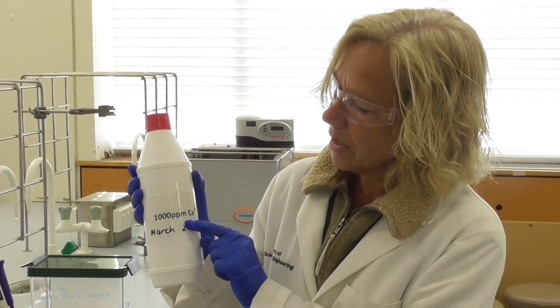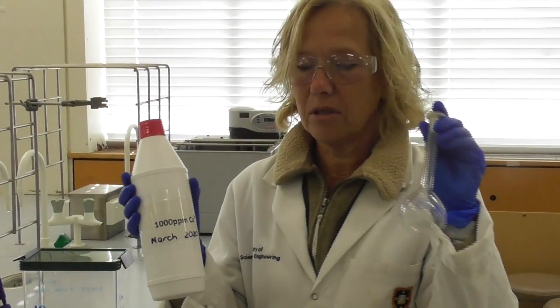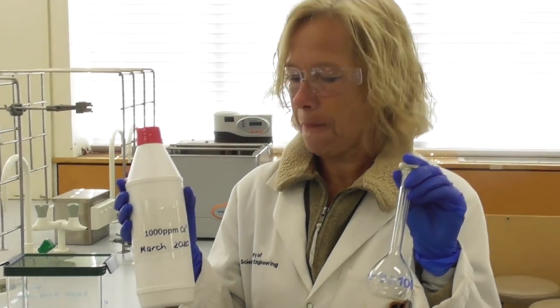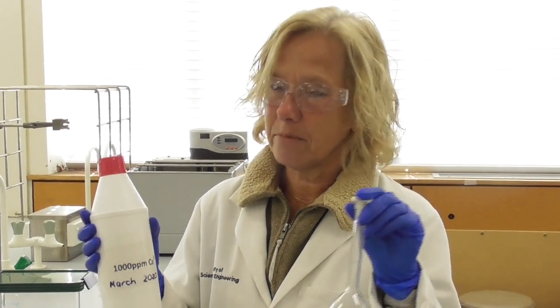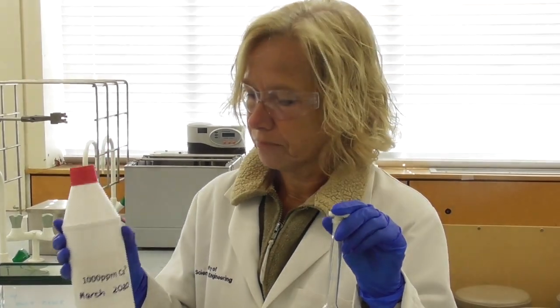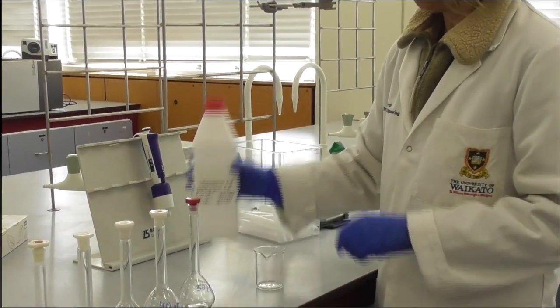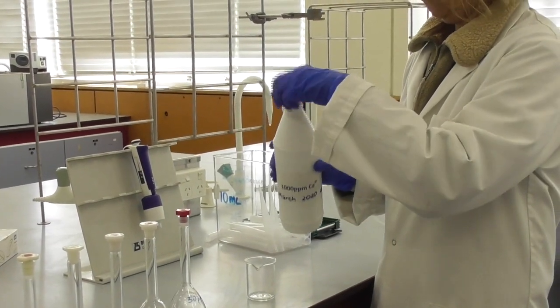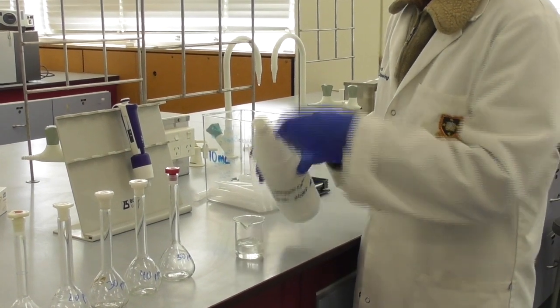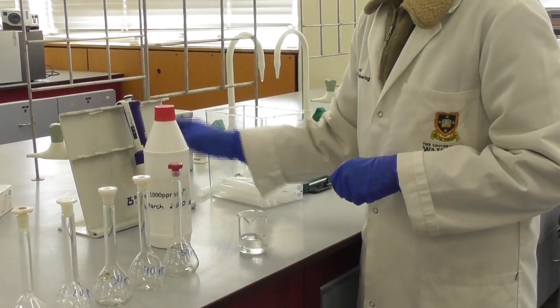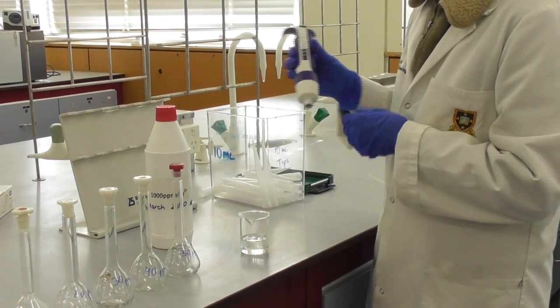So I start out with a 1000 ppm calcium stock solution and I need to prepare my standards in 100 milliliter volumetric flasks. So how much of my stock solution do I need to add to the flask? I pour some of the stock solution into a clean beaker just for the ease of handling.